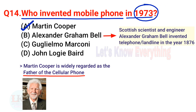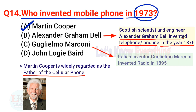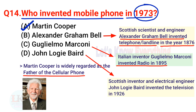Scottish scientist Alexander Graham Bell invented the telephone or landline in 1876. Italian inventor Guglielmo Marconi invented radio in 1895, and Scottish inventor and electrical engineer John Logie Baird invented the television in 1926.